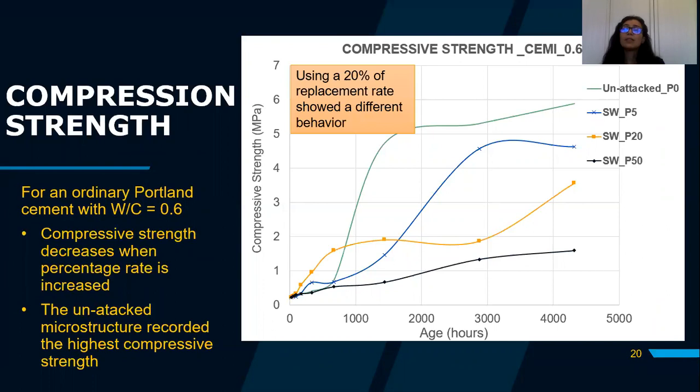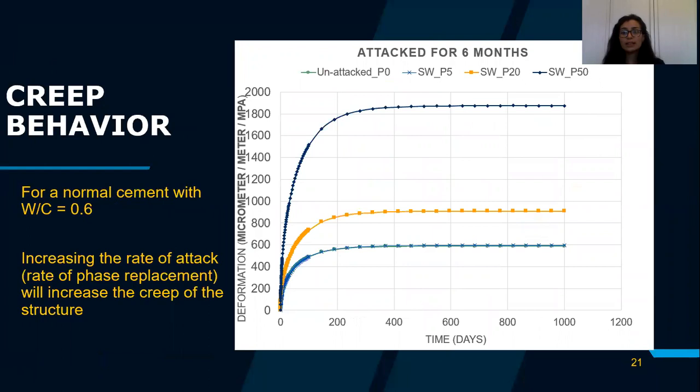The 20% replacement rate showed a different behavior from the other three cases. For the creep behavior, we took a microstructure attacked for six months and applied a load equal to 30% of the strength calculated using the damage model. The results show that as the rate of attack increases, the creep of the structure also increases.